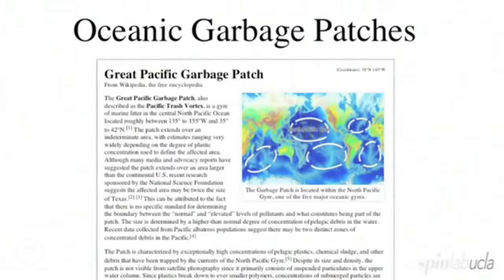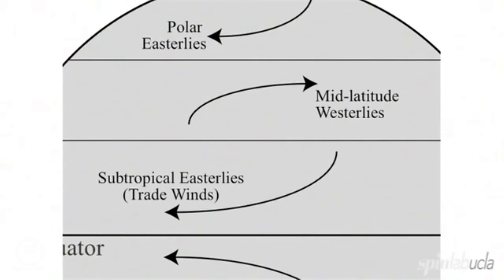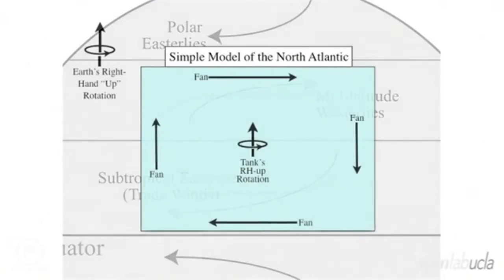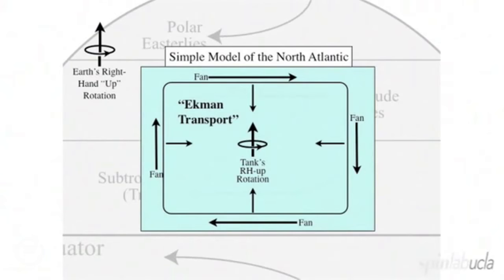In the past decade or so, we've located patches of garbage near the center of each of the ocean gyres. We're going to use our model of the wind belts to drive motion in a simple model of an ocean basin. Instead of actual wind belts, we'll have fans blowing roughly in the same direction as the wind belts. If we put floating detritus in a non-rotating tank, they would just follow the fans. But when we add rotation, there'll also be a net deflection off to the right — what's called Ekman transport — so the detritus will get pushed into the center of the tank and form a patch of garbage.